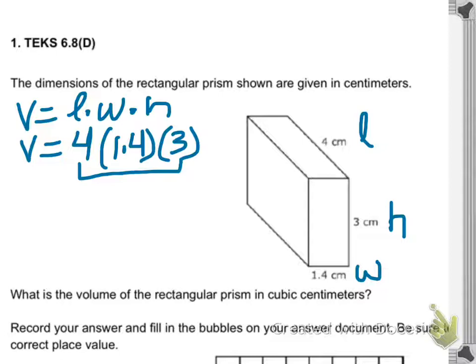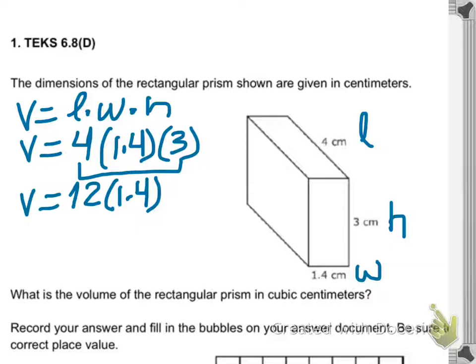Now they need to multiply those three numbers — that's how they get the volume. You can choose to multiply the easiest numbers first. For instance, four times three is twelve, and then twelve times 1.4. They need to show the work of course.